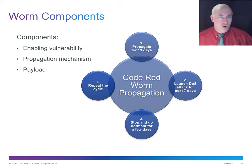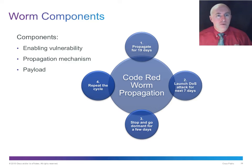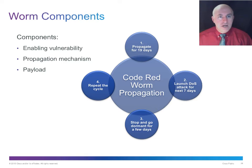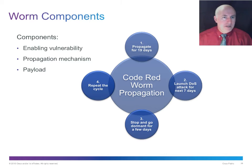Components of a worm include an enabling vulnerability that takes advantage of vulnerable systems — for example, a particular version of Windows. The worm needs a propagation mechanism to reproduce itself to other vulnerable systems. Sometimes worms lay dormant on non-vulnerable systems like Macs, carried around until copied onto a vulnerable system. Then they have a payload — the harmful or spy component that executes once inside a vulnerable system.